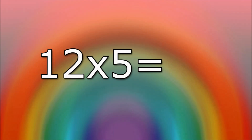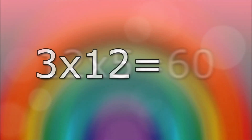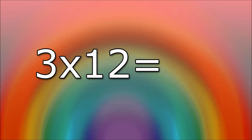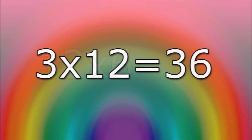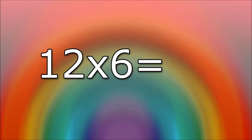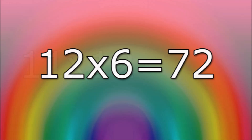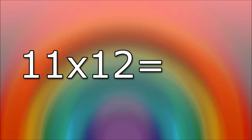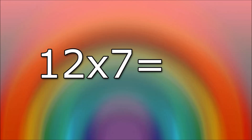12 times 5 equals 60. 3 times 12 equals 36. 12 times 6 equals 72. 11 times 12 equals 132. 12 times 7 equals 84.